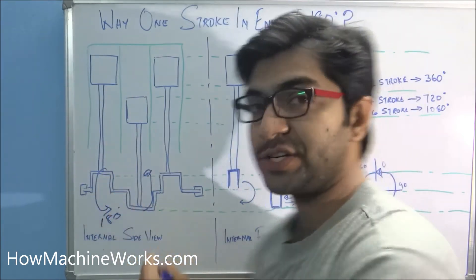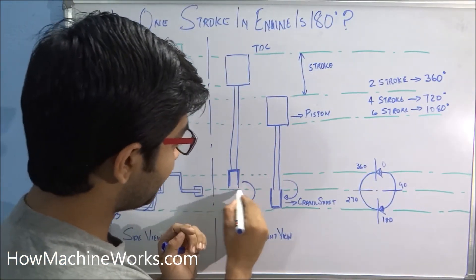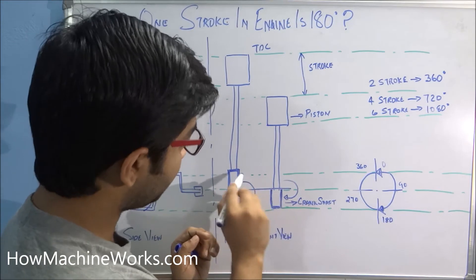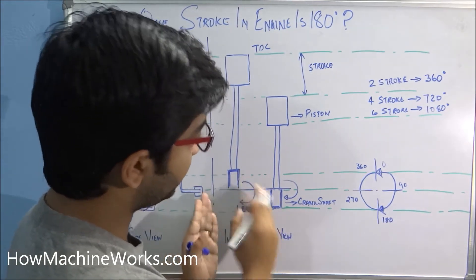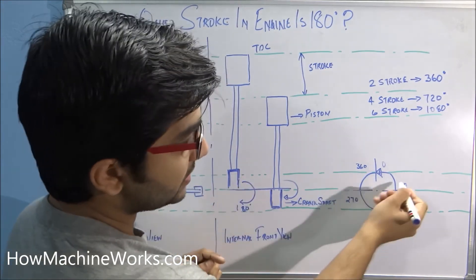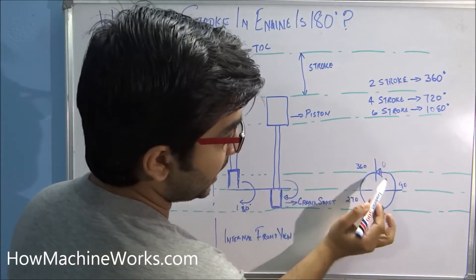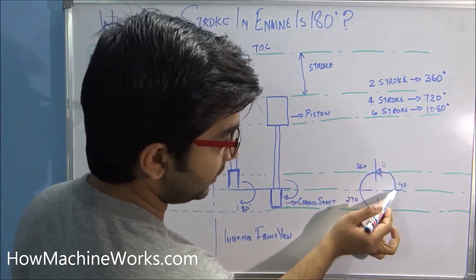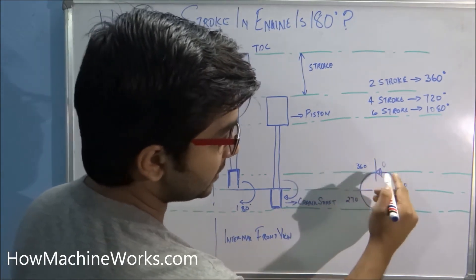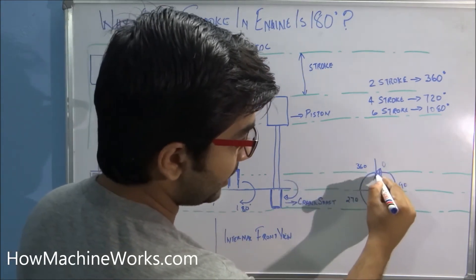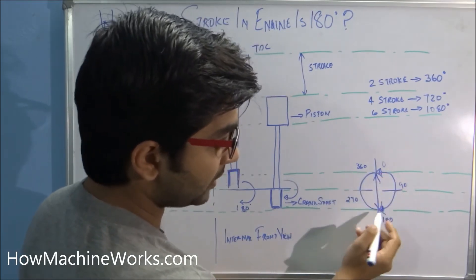This can be understood clearly: this is the center point of the crankshaft. When it moves from here to here, it is 180 degrees of rotation — that's your full half-circle. When the crankshaft moves from here to here it is 90 degrees, and a further 90 degrees completes the 180 degrees — that is one full stroke length.